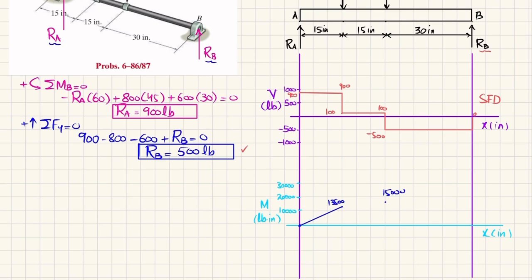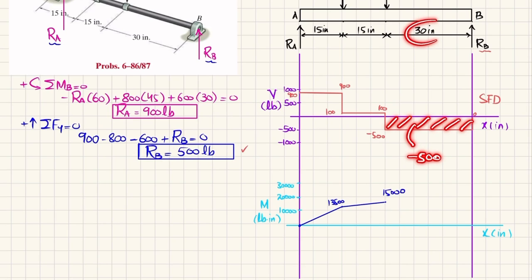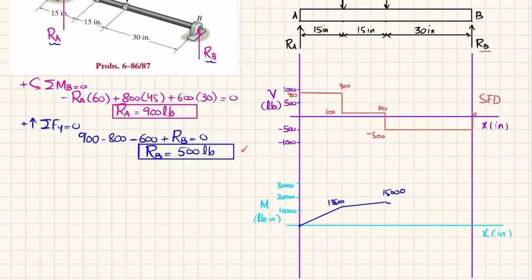The third area under the shear force diagram is −500 × 30 = −15,000 pound-inches. Adding 15,000 + (−15,000) = 0 at the end point. We join these two points with a straight line because the shear force is a horizontal line with negative area, so the slope is decreasing. This completes the bending moment diagram.